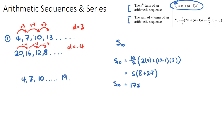Once again, a difficult IB question might give you the sum — for example, the sum of n terms is 175 — and ask you to work backwards to find n. You put in everything you know and use algebra to solve.